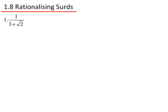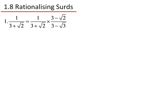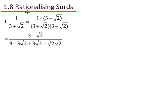Let's do some more complex examples. 1 divided by 3 plus root 2. I need to multiply the top and bottom by 3 minus root 2. Multiplying the tops and bottoms gives me 1 times 3 minus root 2, and then 3 plus root 2 multiplied by 3 minus root 2. So the top just becomes 3 minus root 2.